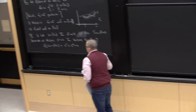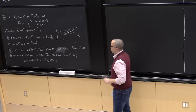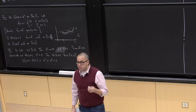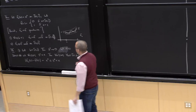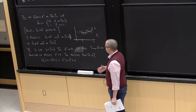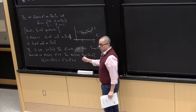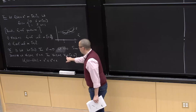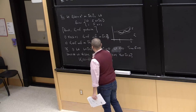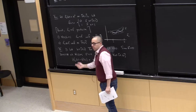Just as with uniform continuity, this M here depended only on b, not on the point x. For uniform convergence, for every epsilon you can find an M depending only on epsilon and the function f, but not on x. That's the key difference from pointwise convergence.